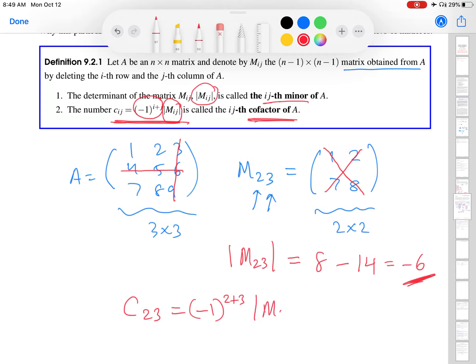Anyway, negative 1 to the 2 plus 3 times the minor. Okay, so negative 1 to the 5th is negative 1. And then the determinant that we had calculated was negative 6. So we get 6. So again, the cofactor all it ever does is possibly change the sign of the minor, not the actual numerical quantity.